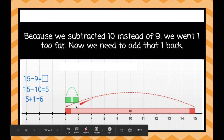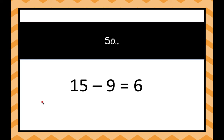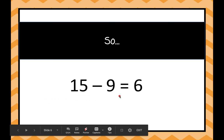So we go 15 minus 10 equals 5. Then we give that one back. We were at 5, we gave one back, we're at 6. So 15 minus 9 equals 6.